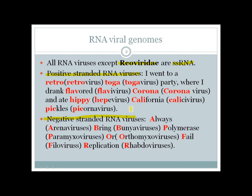For positive-strand RNA viruses, use this mnemonic: suppose you are in California and someone invited you to their retro toga party. When you arrived, they offered you a flavored corona drink, and after drinking it you also ate some California pickles made by a hippie. So: Retrovirus, Togavirus, Flavivirus, Coronavirus, Hep E virus, Calicivirus, and Picornaviruses are the positive-stranded RNA viruses.